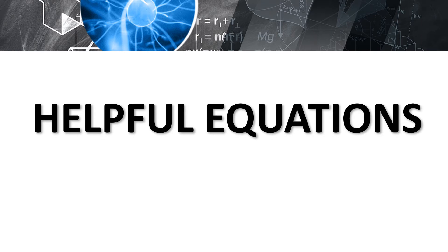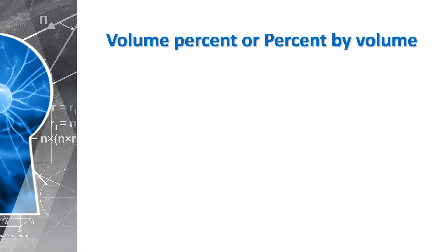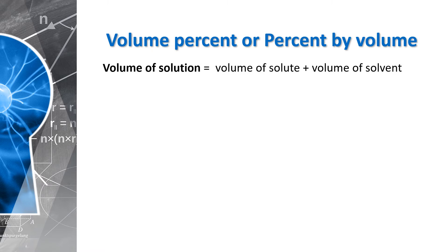We have here helpful equations that can help us in answering the activities later on. For volume percent or percent by volume — they are synonymous — the volume of solution is equal to the volume of solute plus volume of solvent. So if you add the solute and the solvent, you get the solution.